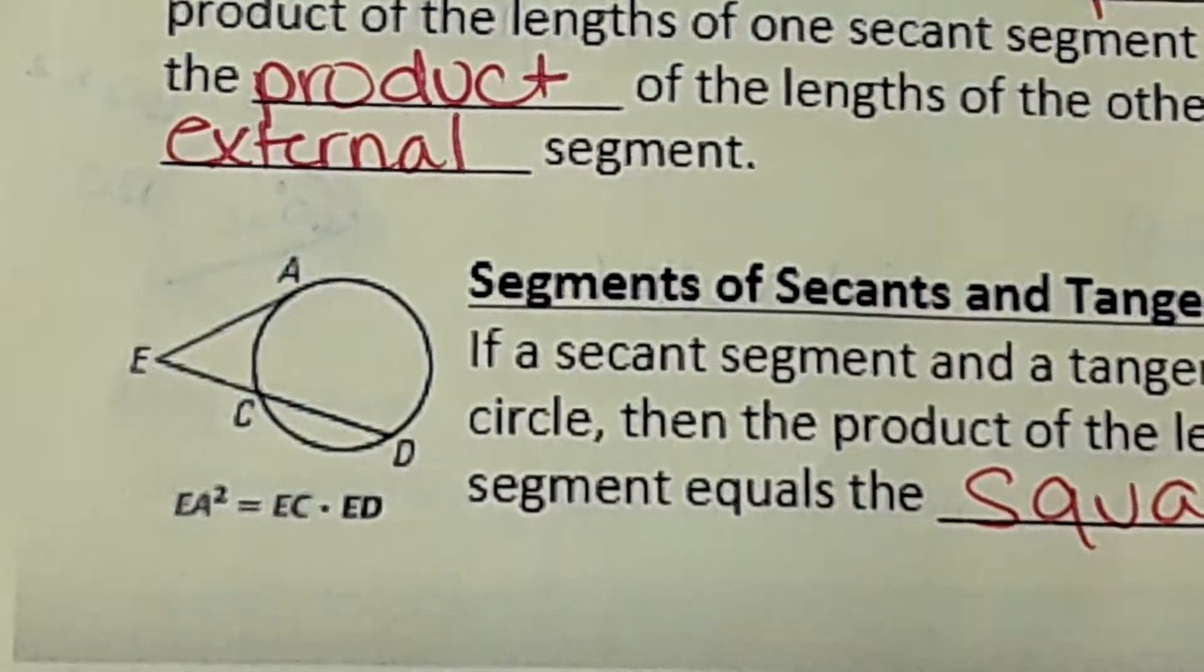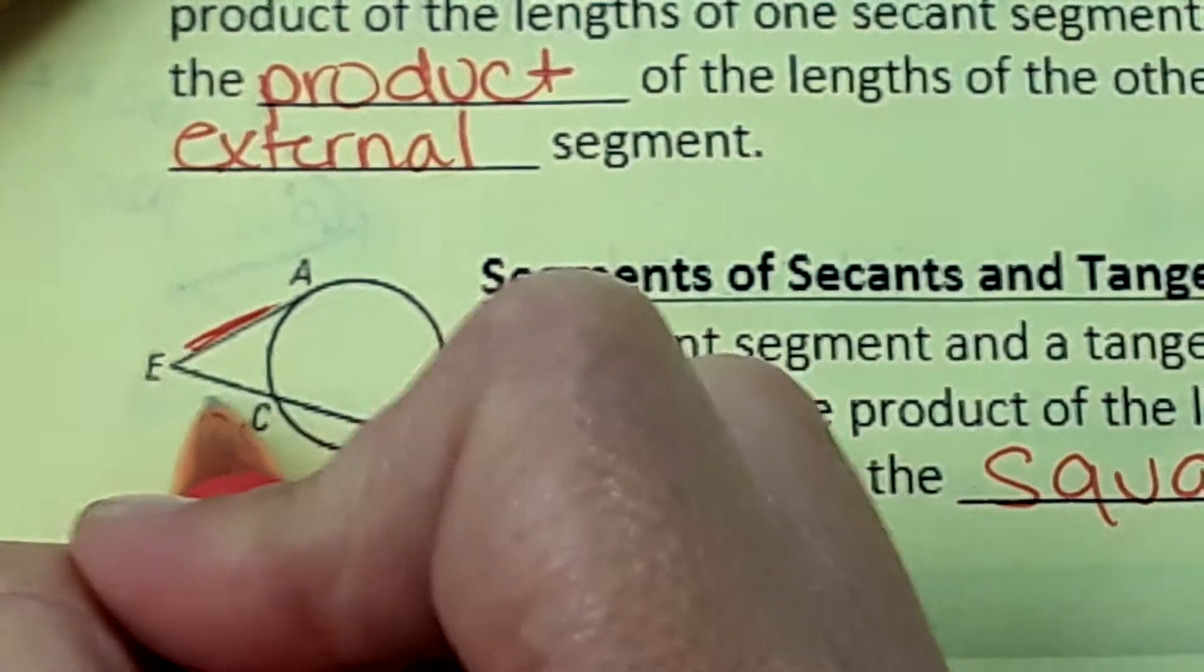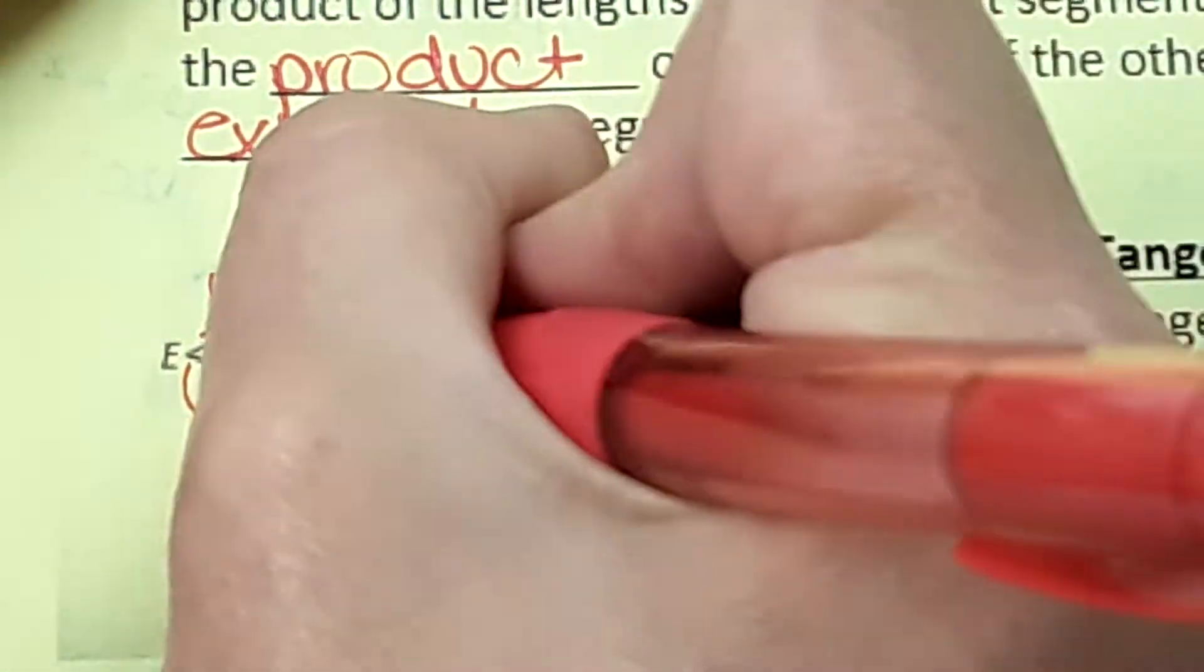Last one right here, we can square this length and that's equal to EC times the entire length. So if EA was 6, EC is 2, and CD is 16.